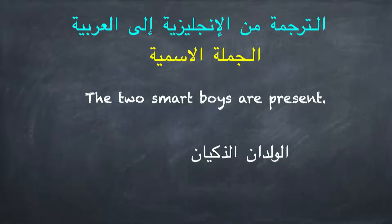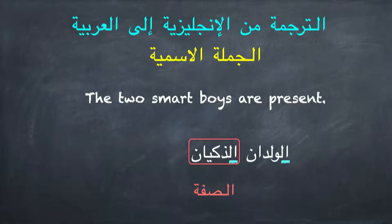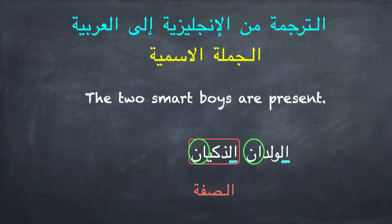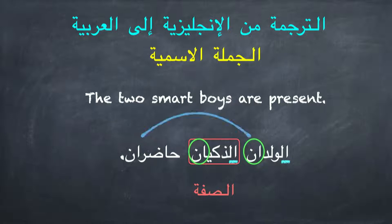لاحظوا أعزائي الصفة 'الذكيان' معرفة بـ'أل' مثل موصوفها 'الولدان'. وأيضاً الصفة تنتهي بألف ونون مثل موصوفها. ونترجم 'present' بـ'حاضران'، والخبر 'حاضران' ينتهي بألف ونون مثل 'الولدان'.